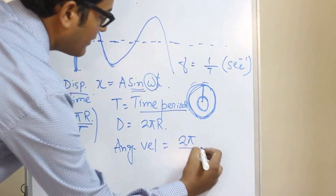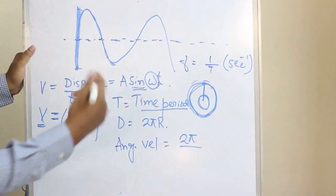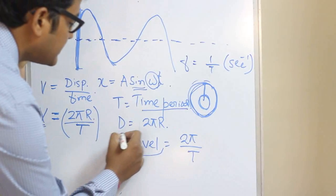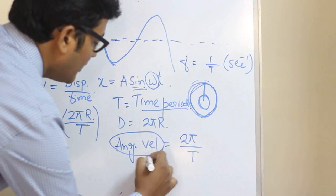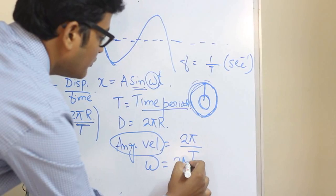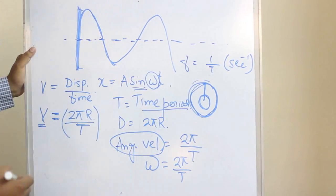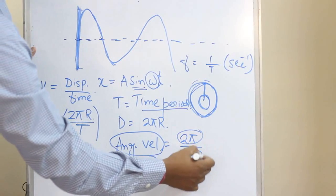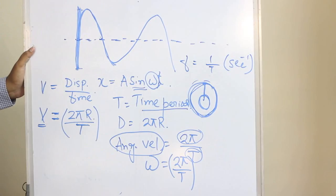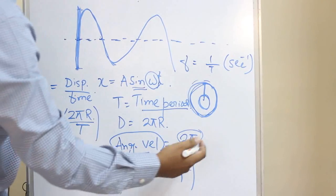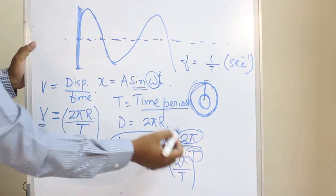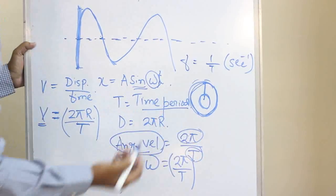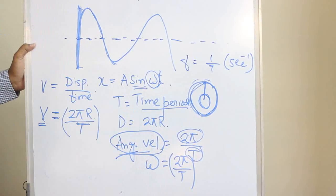So 2π by whatever is the time taken, T. Now this angular velocity is called omega: 2π by T. So omega is nothing but the angular displacement upon the time taken. It's simple, isn't it? Angular velocity is the simple relationship between displacement upon time—which displacement? Angular displacement. Why? Because it is angular velocity.